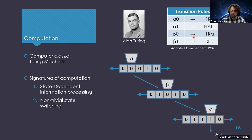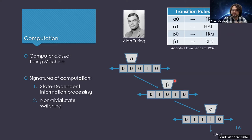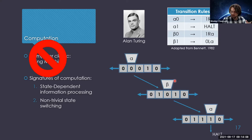The big signatures of computation in this Turing machine are: state-dependent information processing — alpha and beta are states that process zeros and ones differently — and non-trivial state switching. The brain is not a Turing machine, but these two signatures are what we might look for if we want to find signs of computation in the brain. Importantly, anesthesia provides a really interesting dataset when looking at state-based anything, because under anesthesia the brain oscillates between large global slow and theta oscillations.